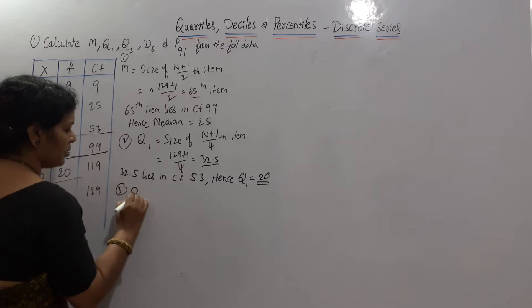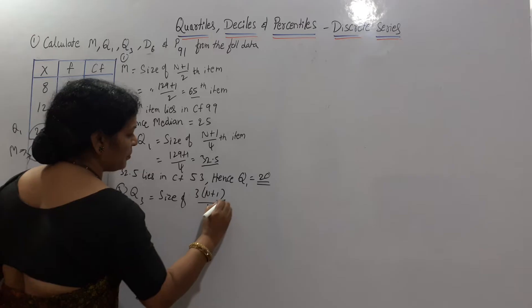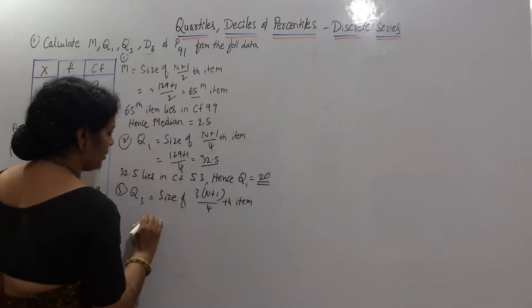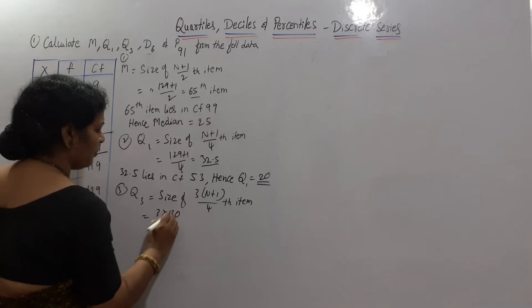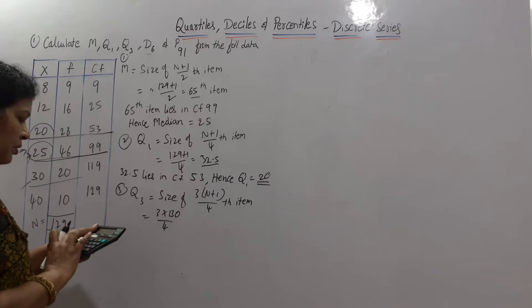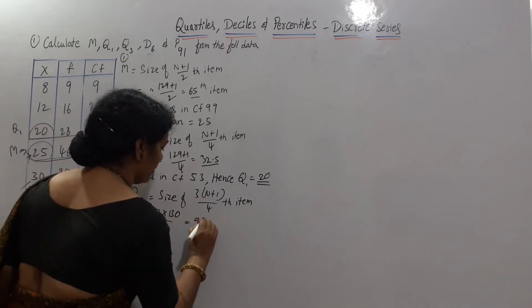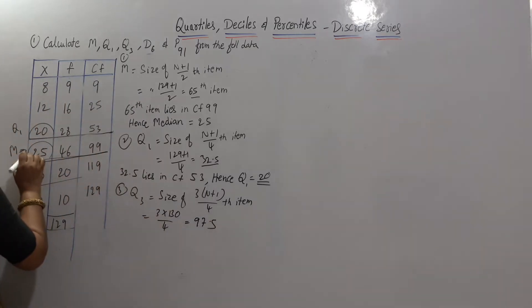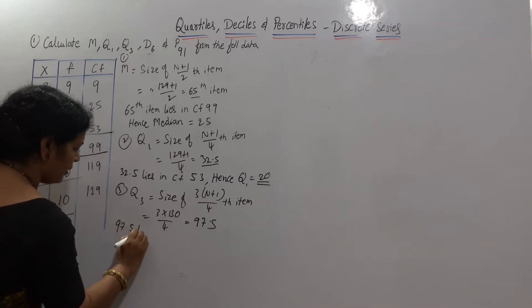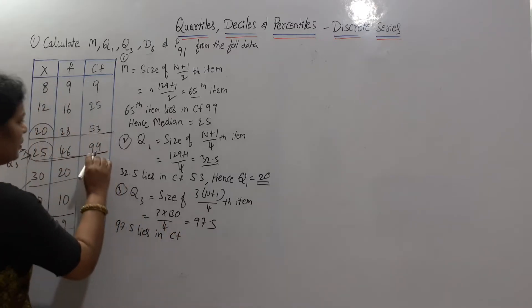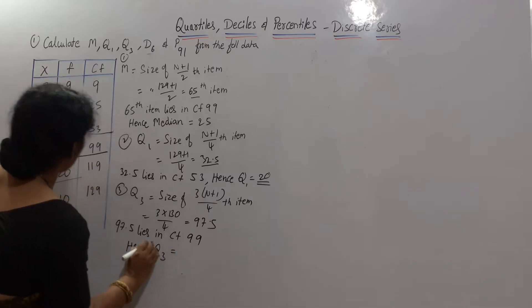For Q3, the formula is size of 3×(n+1)/4 th item. That is 3×130 divided by 4, which equals 97.5. The 97.5th item lies in CF 99. Hence Q3 is equal to 25.